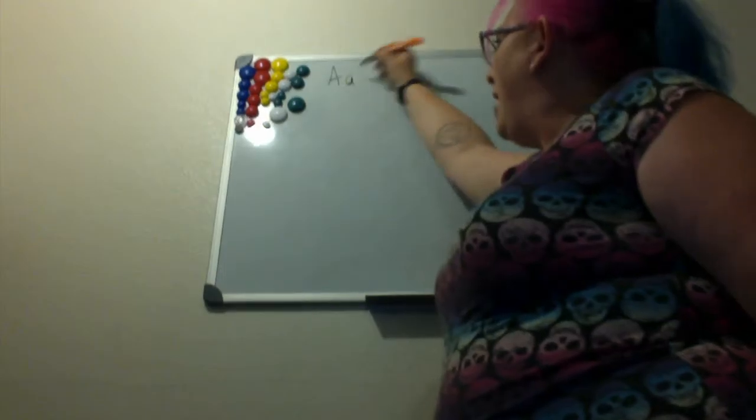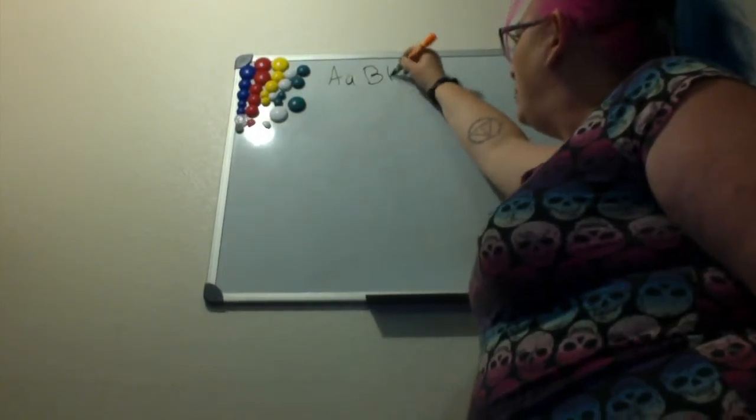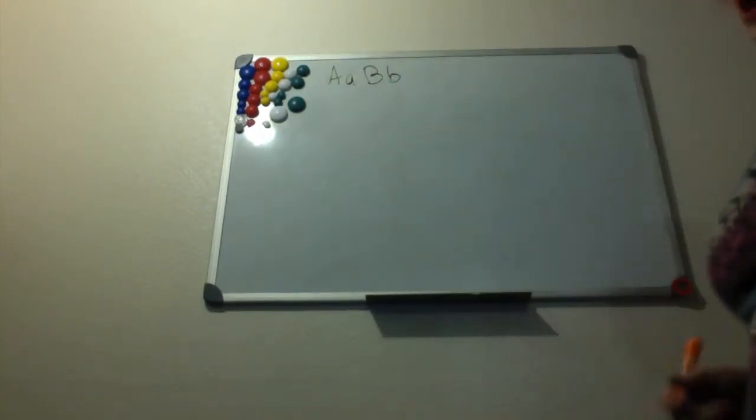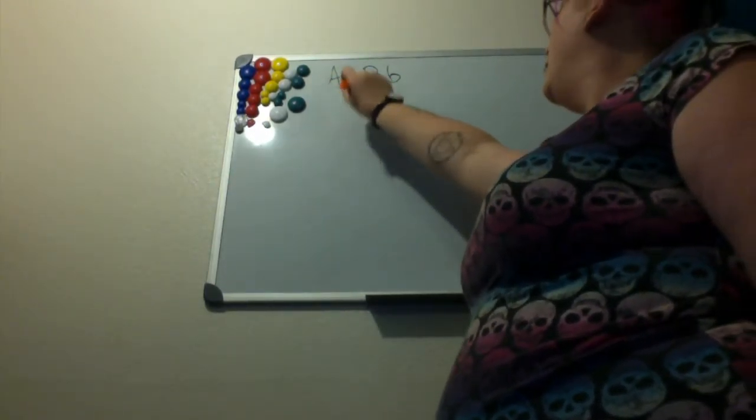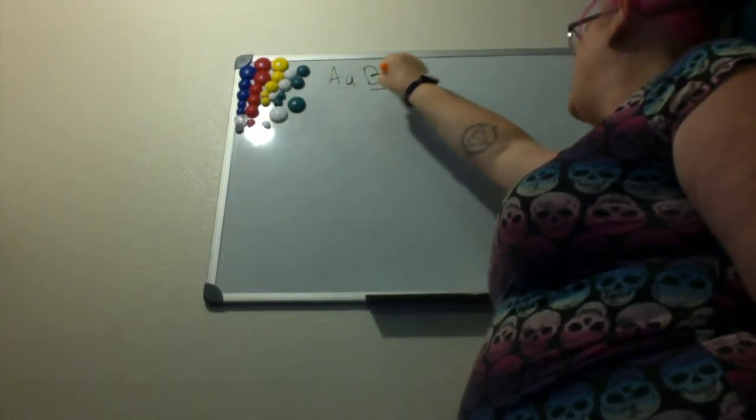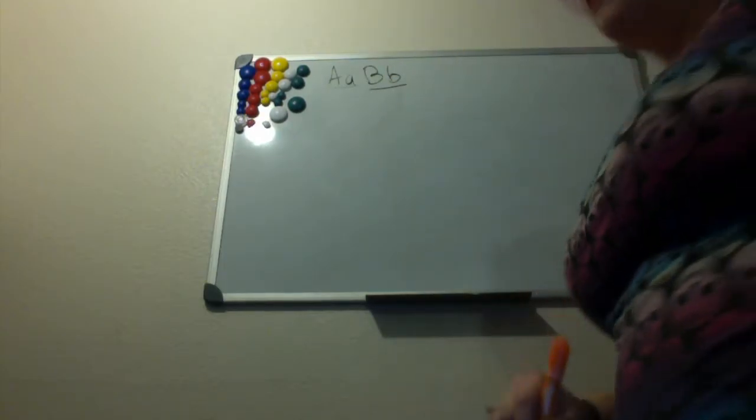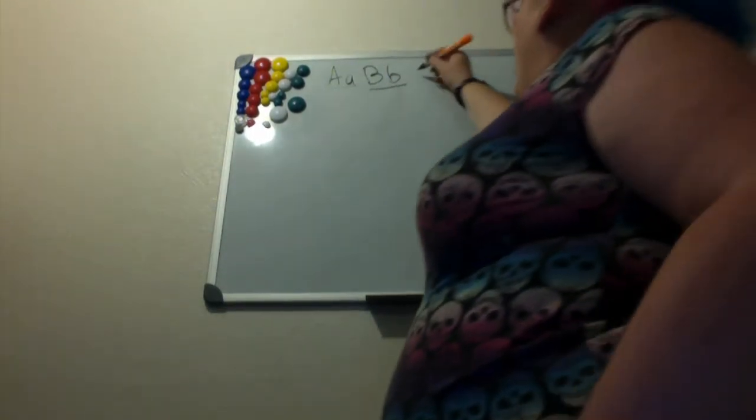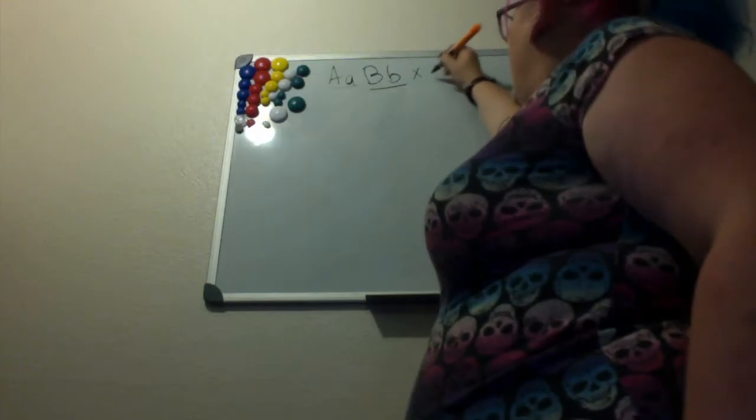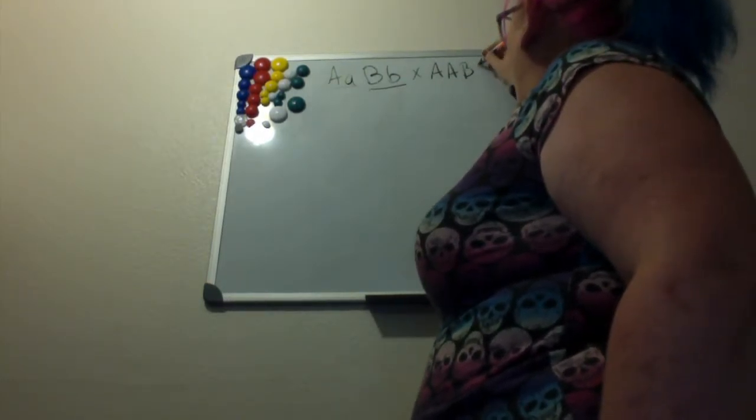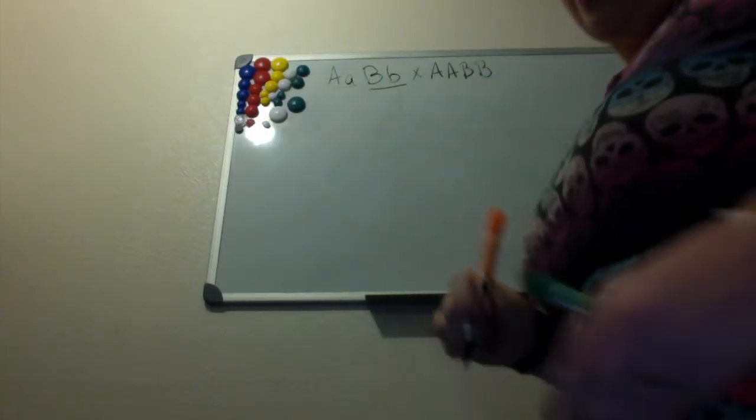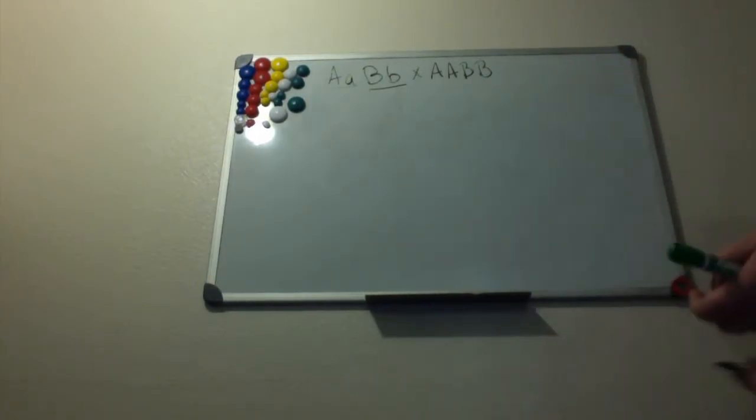Let's say we're looking at allele A and allele B. So we've got a heterozygous for allele A and heterozygous for allele B, and we're going to cross that with a homozygous dominant parent for both genes.